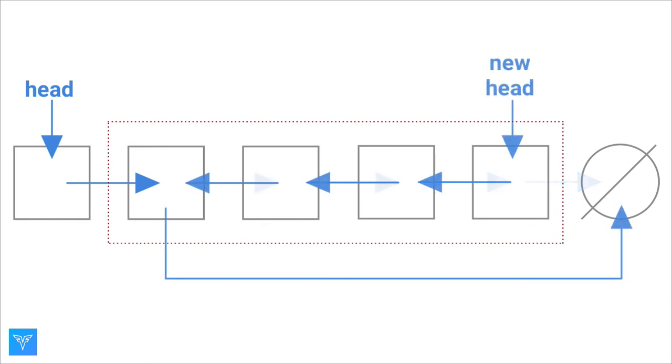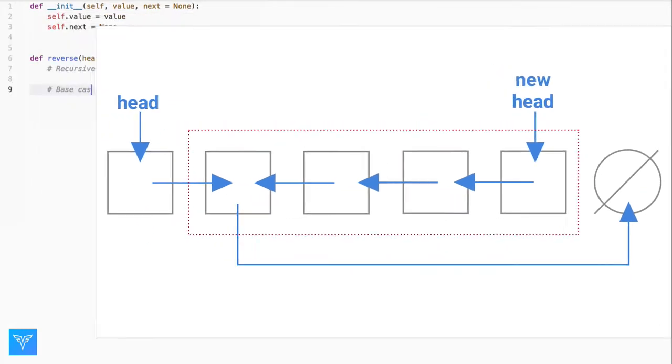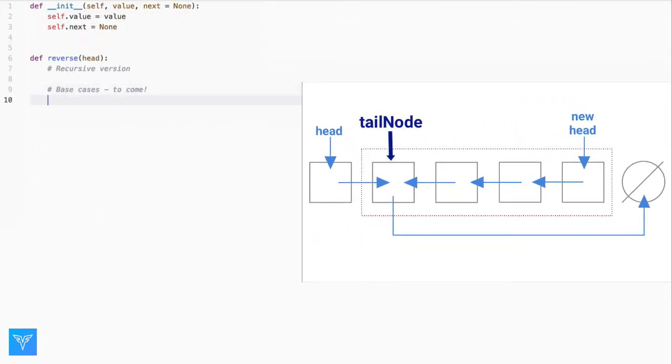Starting here, we can traverse the list one node at a time until we reach this node, which goes to null. Let's call this node tailNode for now. Once we finish reversing the linked list, newHead is what we ultimately want to return.